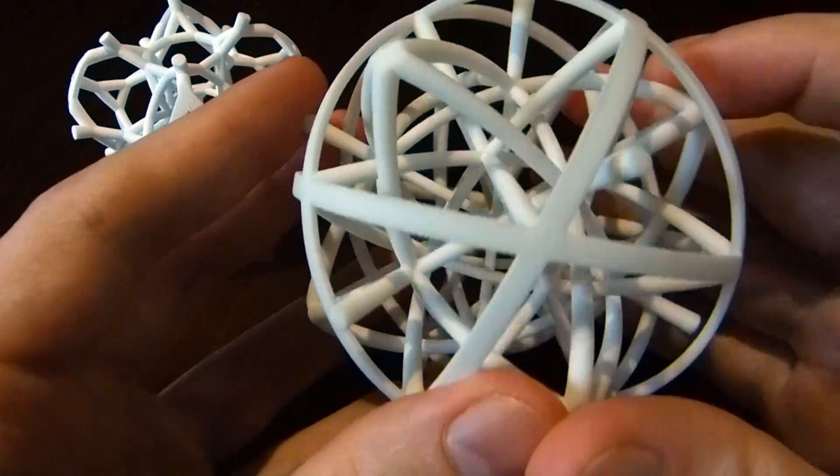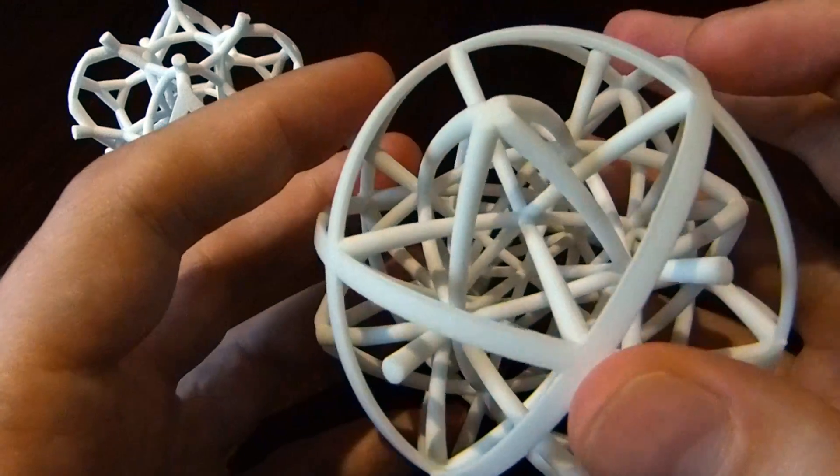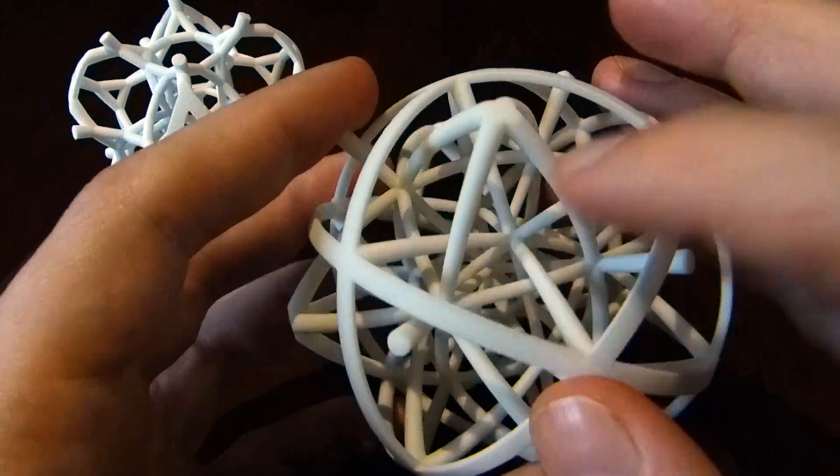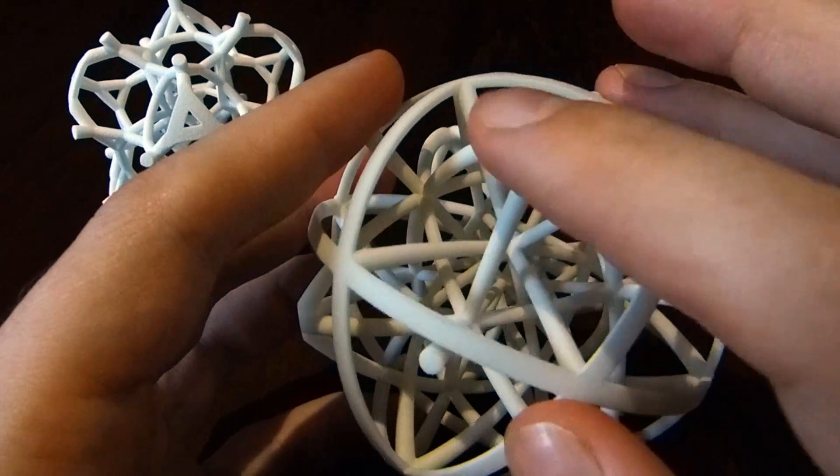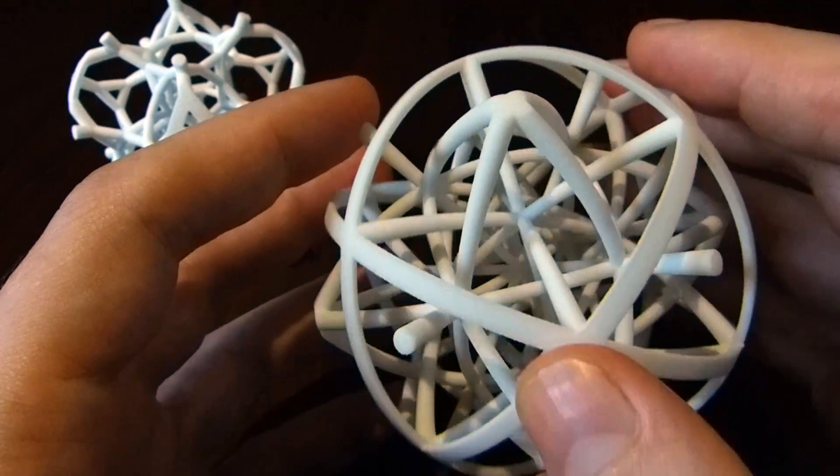So you can see maybe, this one here, the vertex in the middle is replaced by this octahedron, which is centered on that vertex. So this guy here is the dual of this guy.